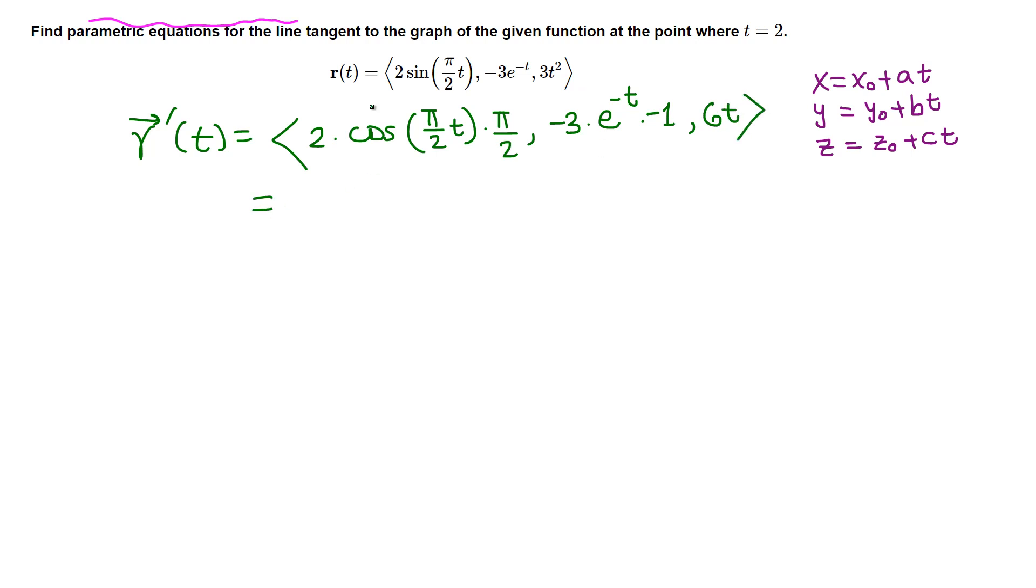Let's simplify: we can cancel the 2s, so this is π cos(π/2·t). Negative times negative is positive, so we have 3e^(-t), and 6t. This derivative is related to the slope of the tangent line, and we have the parameter value.